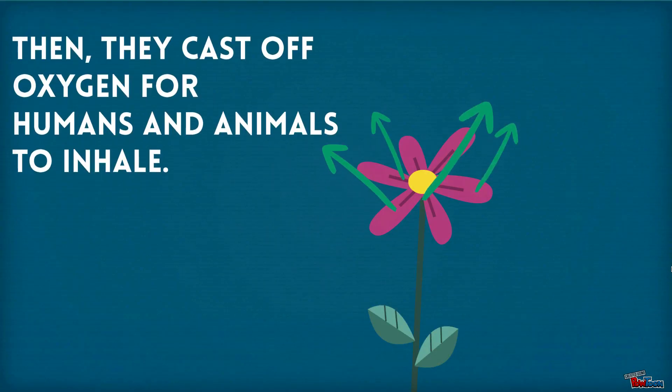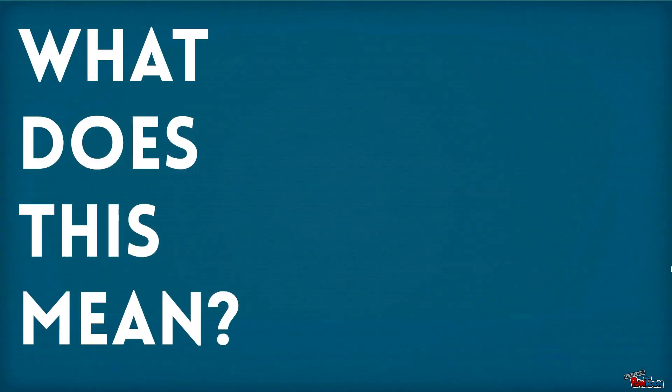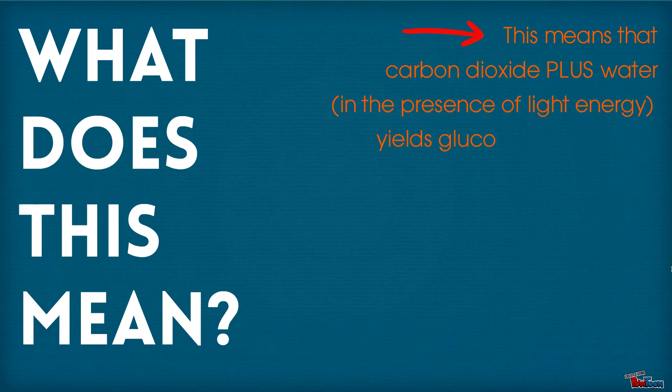Then, they cast off oxygen for humans and animals to inhale. So what does this mean? Well, this means that carbon dioxide plus water in the presence of light energy yields glucose plus oxygen.